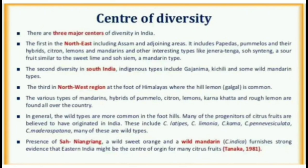Many of the progenitors of citrus fruits are believed to have originated in India. These include C. latipes, C. limonia, C. karna, C. penicillata, and C. maderas patana. Many of these are wild types. The presence of 'sa niangriang,' a wild sweet orange, and a wild mandarin C. indica furnishes strong evidence that eastern India might be the centre of origin for many citrus fruits.